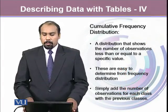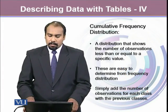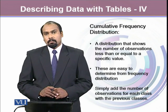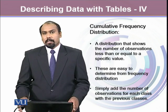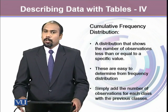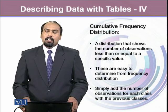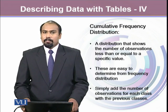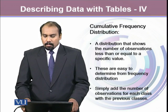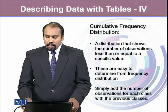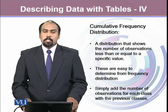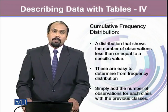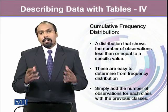Cumulative frequency distribution shows the number of observations less than or equal to a specific value. Cumulative frequency distributions are constructed when we add another column to the frequency distribution called cumulative frequencies. These are easy to determine from the frequency distribution, where we simply add the number of observations for each class with the previous classes.